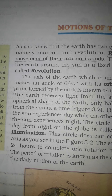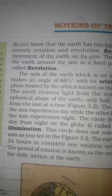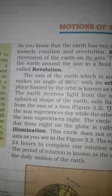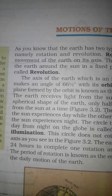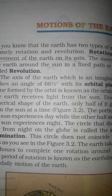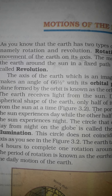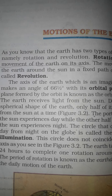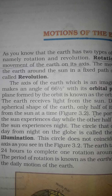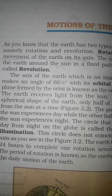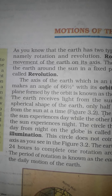If the earth did not rotate, the portion of the earth facing the sun would always experience day, bringing continuous warmth to that region. The other half, which is away from the sunlight, would always be in darkness and face freezing cold all the time. Life would not have been possible in such extreme conditions.